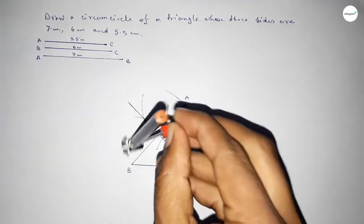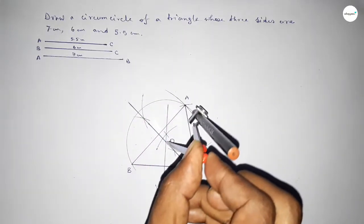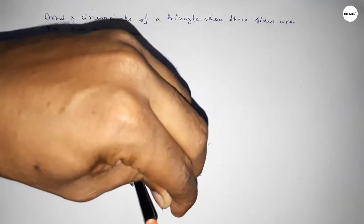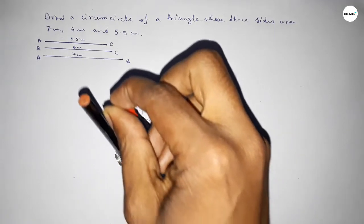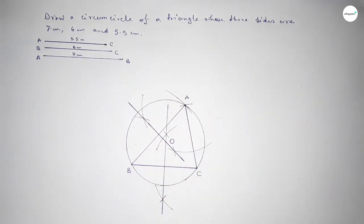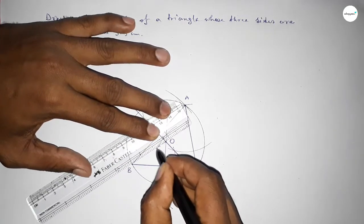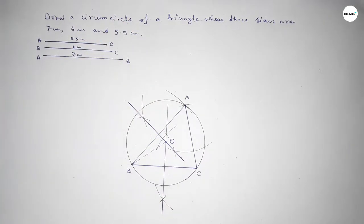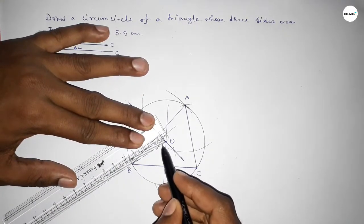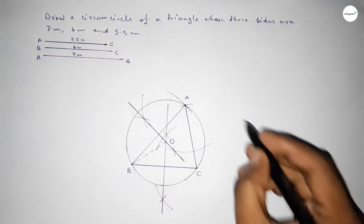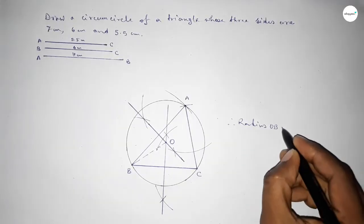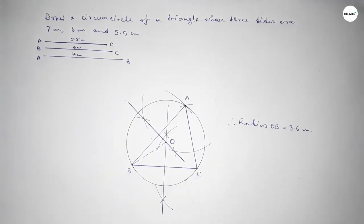Now taking the distance OB, OA, and OC, we draw an arc through points A, B, and C. This is a perfect circumcircle of the triangle. Drawing OB — this is the radius of the circle. The radius OB equals 3.6 centimeter. That's all, thanks for watching. If this video is helpful to you, please share it with your friends.